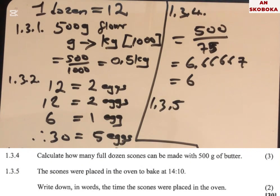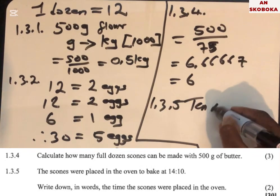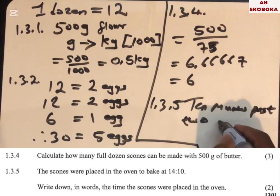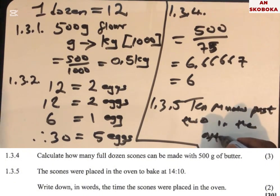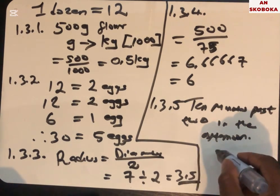Question 1.3.5: the scones were placed in the oven at 14:10. Write down in words the time the scones were placed in the oven. The answer is: ten minutes past two. This completes the 30 marks of question 1.